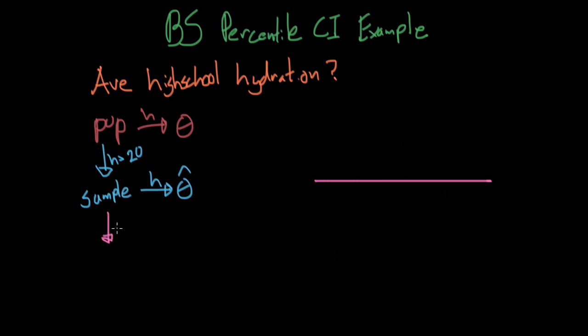So from this sample, we go ahead and take sampling with replacement, where n equals 20 once again. And we get BS bootstrap samples. And we get a lot of them, and we'll talk about how much in one second. From each of these bootstrap samples, we apply h one more time, and we get lots and lots of theta hat stars.